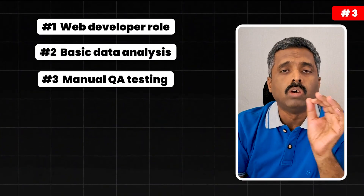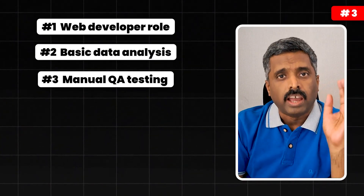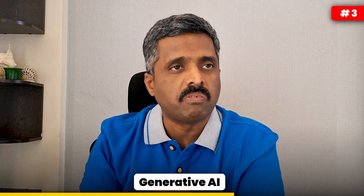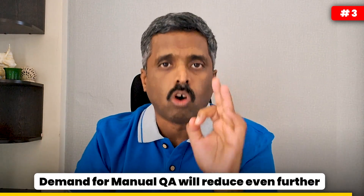Number three is manual QA testing. As we have seen over the years, the need for manual QAs has reduced. Earlier, if there were 10 people doing manual QA testing, now probably we have two or three because the rest of the seven roles have been automated already. And with the help of generative AI and other advancements happening, this is going to reduce even further, so you will see less and less openings for manual QA going forward.